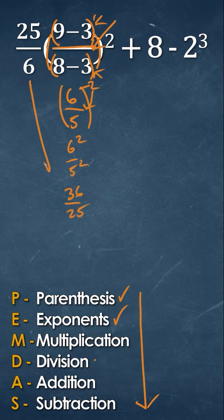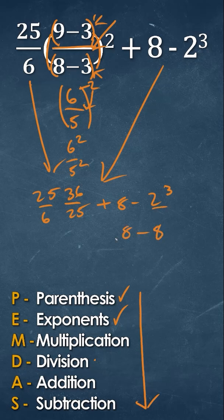Now with that we're going to add in our additional items so we have 25 over six plus eight minus three over two raised to the cubed. So we'll take care of this one exponent right here which is going to give us eight.